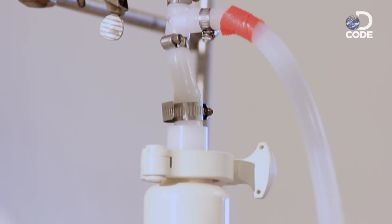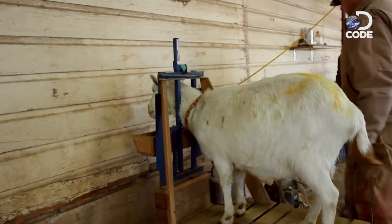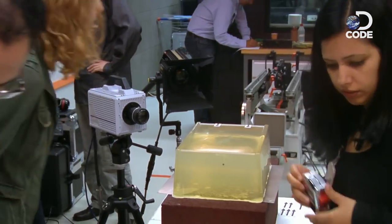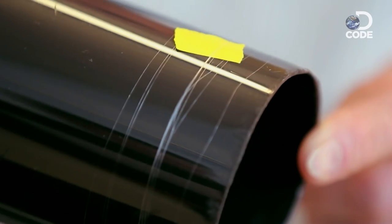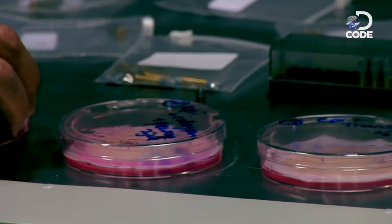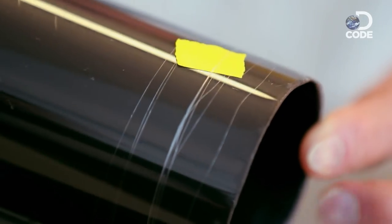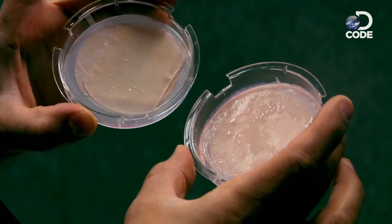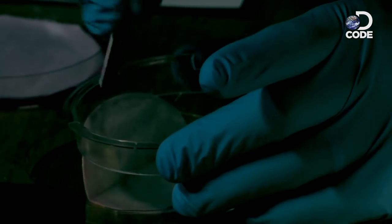But Dutch artist Jalila Esaidi and her team had an even bolder idea. They merged the silk with lab-grown human tissue. We provided the artist with spider silk fabric. Then her collaborators actually grew the skin layers on top of that fabric.